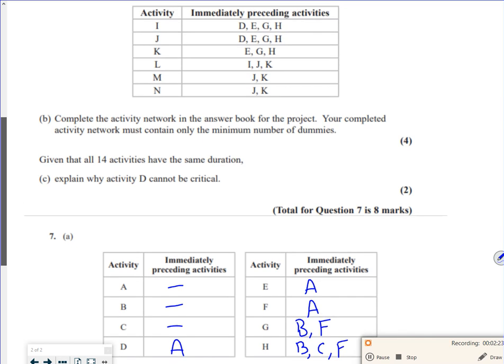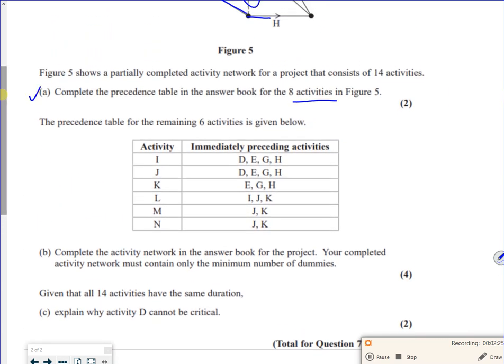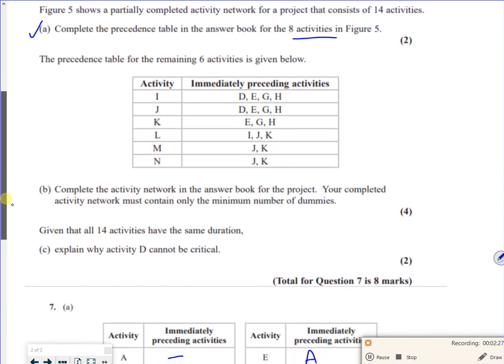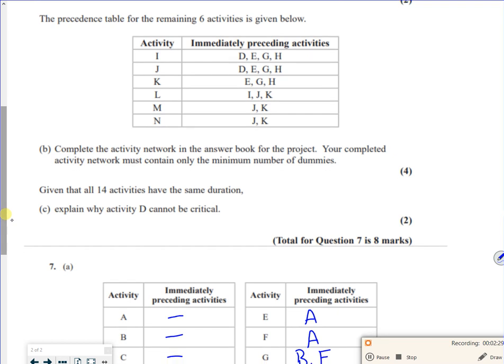Back up to this bit now. So that's part A done. I've got the precedence table for the remaining six activities. Complete the network.